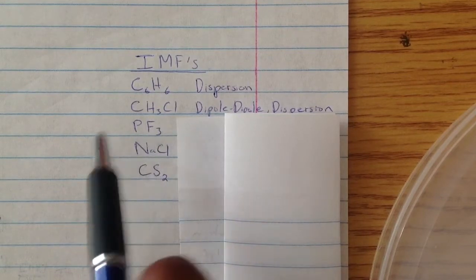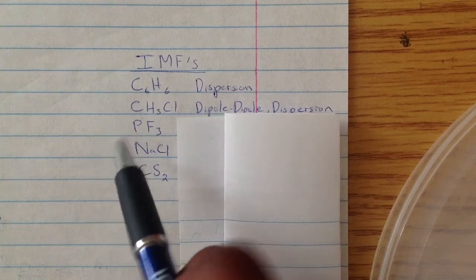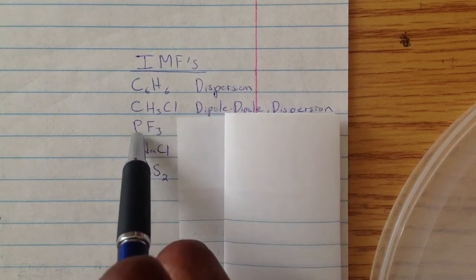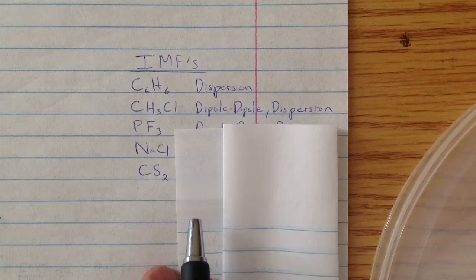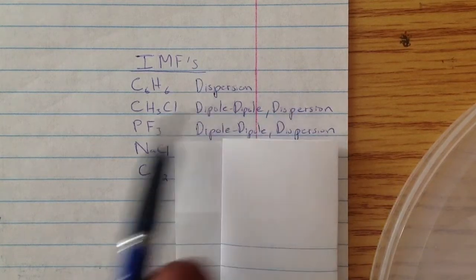We can look for hydrogen bonding, but there's no hydrogen bonding. Even though there's fluorine, there's no hydrogen, so there's no hydrogen bonding. It's just going to be dipole-dipole and dispersion.